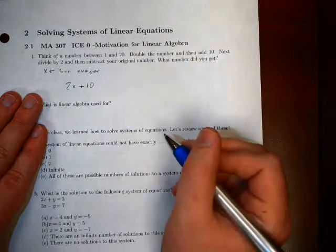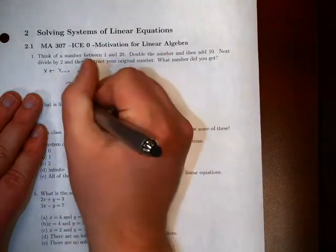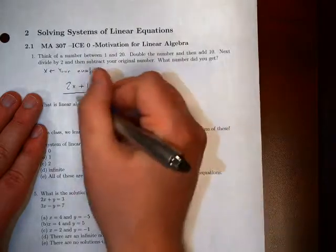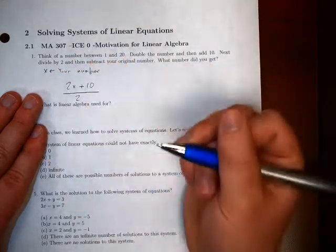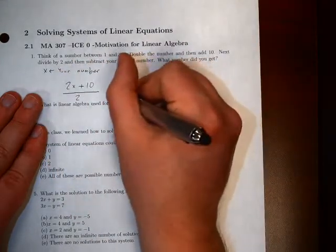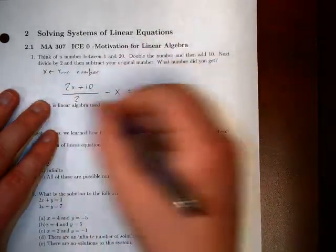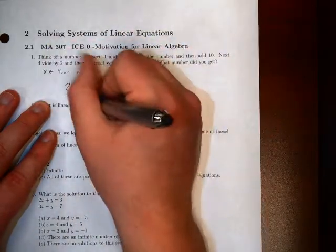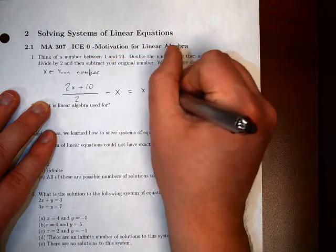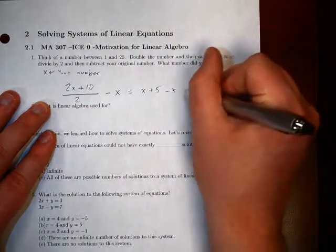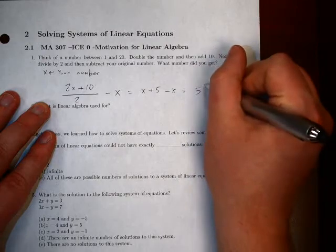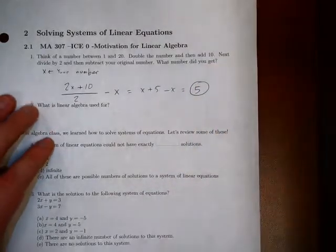Now that we've done this, we're going to have you divide by 2, and then subtract what your number was. So subtract x. So if we follow along with this equation, we can distribute the 2, so we have x plus 5 minus x. Those x's cancel, and we should get a value of 5 in the end.